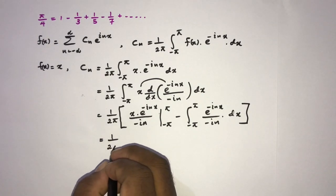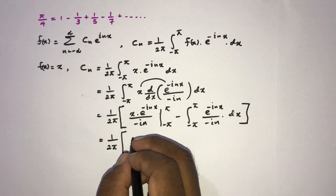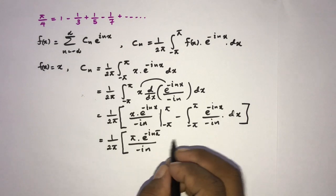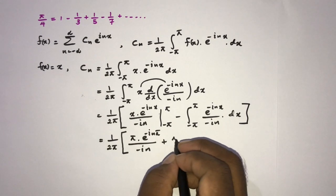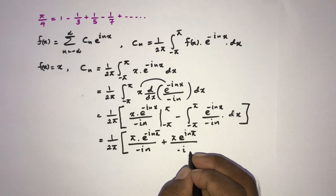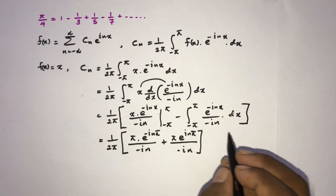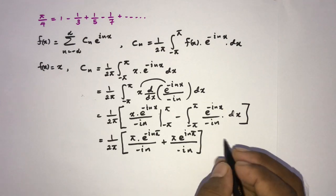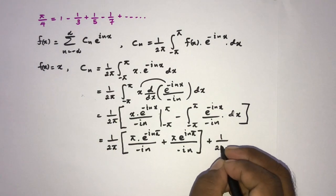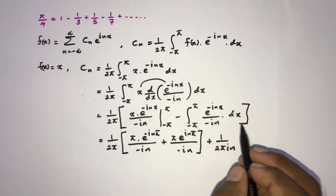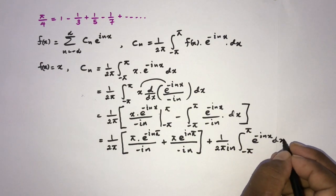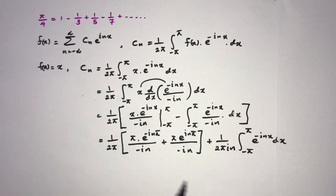Applying the limits — upper boundary pi and lower boundary minus pi — we get 1 over 2π times: if we apply pi we have pi times e to the minus in pi over minus in, then minus, and with the minus giving plus, pi times e to the i·n·pi over minus in. Then we have plus from the double minus, and 1 over 2π·in times the integral from minus pi to pi of e to the minus inx dx.